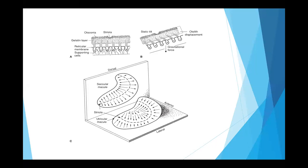In the semicircular canals, there is no particular directional orientation of the hair cells — it is the direction of the cupola movement that determines excitation or inhibition: toward the utricle excites, away from it inhibits. But in the saccule and utricle, hair cells point in different directions because movement can occur in all directions. The saccule detects up and down movement — for example, when going in a lift. The utricle detects movement in a car, which is linear horizontal motion.